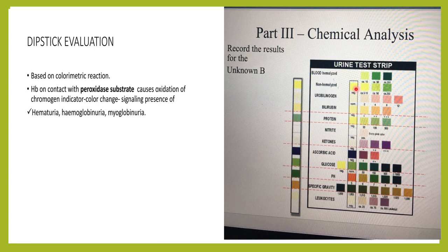Yellow being negative and greenish purple being positive. But remember when you get a positive dipstick test, it means it could either be hematuria, it can also come positive in hemoglobinuria, and it also can come positive in myoglobinuria.